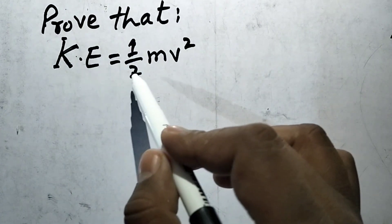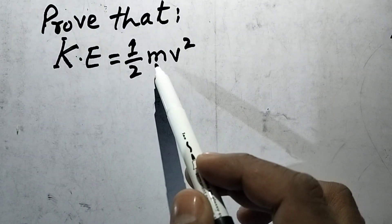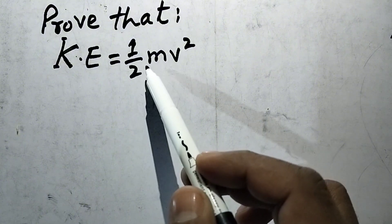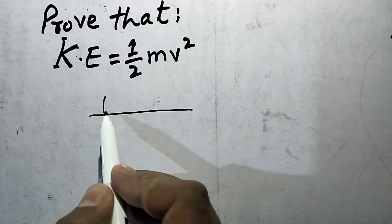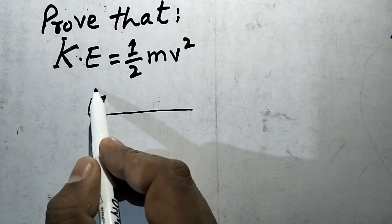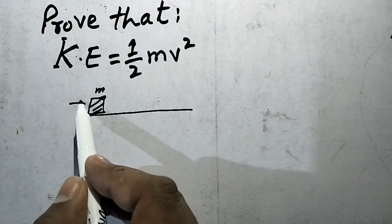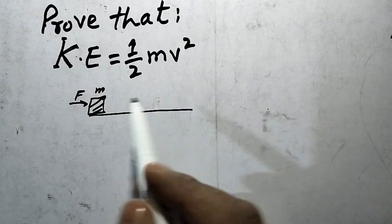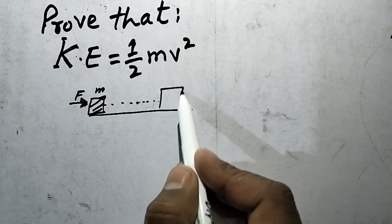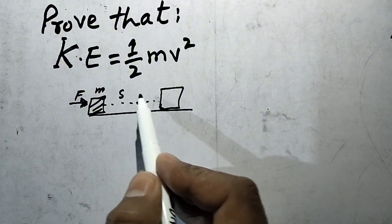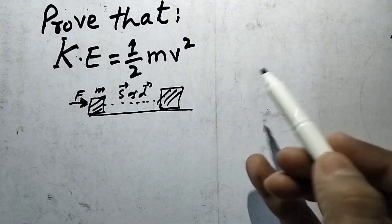We have to prove that KE is equal to 1 upon 2 mv square — we have to obtain this formula of kinetic energy. Suppose an object of mass m is initially at rest when a force is applied on a body, then it moves in this direction and covers some displacement S.